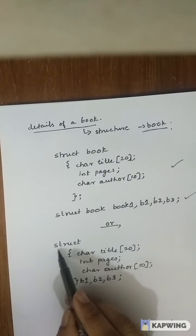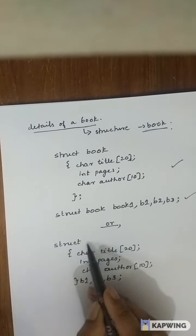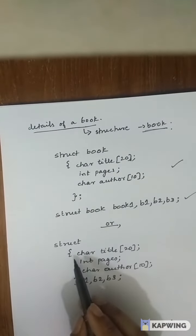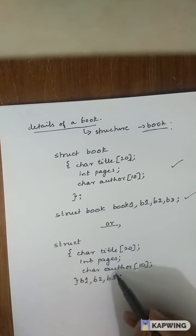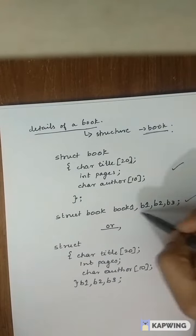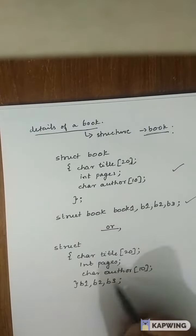First I can write struct. Then I am omitting the tag name, so the tag name is optional. And I am opening the braces, grouping together the three variables inside the structure. And I am writing B1, B2, B3 here itself. And closing it with a semicolon. So either I can declare the variables like this or like this.